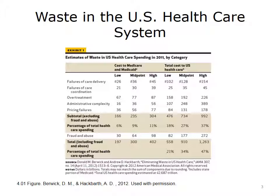Clinical waste would include things such as defensive medicine, preventable hospital admissions, medical errors, unnecessary treatment variation, hospital-acquired infections, and over-prescription of antibiotics. The operational category would encompass the categories of administrative complexity, pricing failures, and fraud and abuse. This category could include continued use of paper forms, redundant claims processing, and ineffective implementation and use of IT.